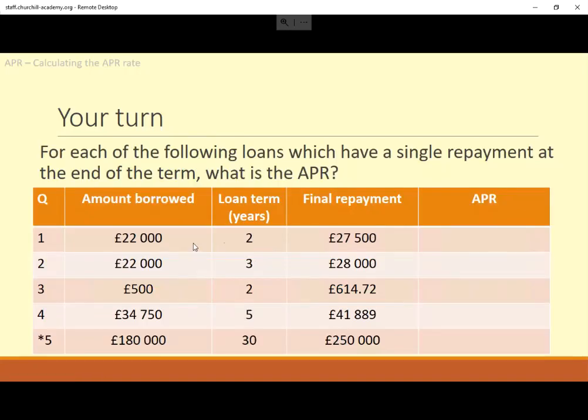Here are some questions for you then. So this one is very similar. Just two years, £22,000 again, different final payment. And this one, similar sort of stuff, but over three years instead. £500, so a smaller loan that time. Slightly bigger loan, but for lots of years. And then this one here, I mean, this wouldn't happen. Nobody would lend you £180,000 for 30 years and then not ask for any of it back until the end. That's not realistic. But it's interesting to see what sort of APR rate that works out as. Right, next slide's got the answers. So you want to pause this and go and do those questions and then come back to it when you're ready.